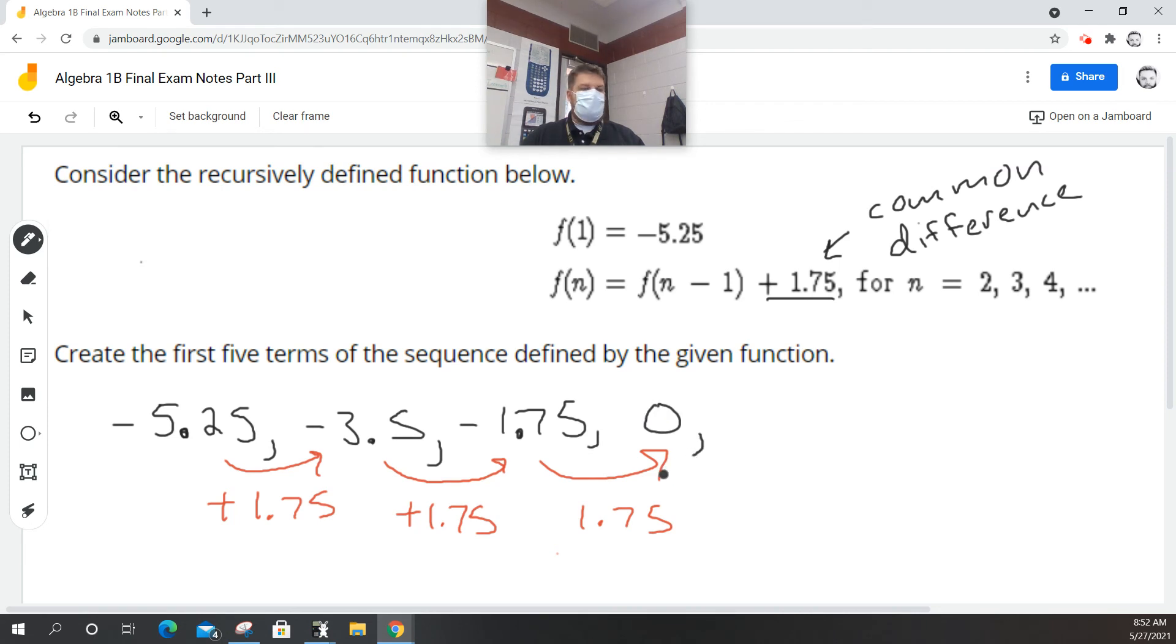And then we have one more to go. We're going to add 1.75. And guess what that is? It's just 1.75. 0 plus 1.75 is 1.75.